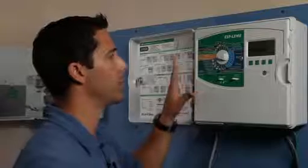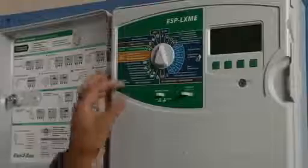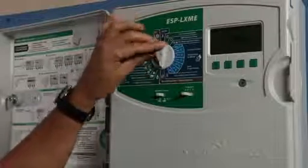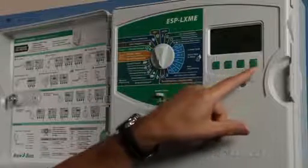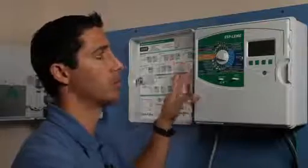One feature we really think speeds up the implementation of flow sensing on this controller is the fact that they've got pre-programmed k-factor and offsets into the controller. So we simply enable flow sensing and select the flow sensor we want to use, and we don't have to spend time plugging in those numbers. They're already there for us.